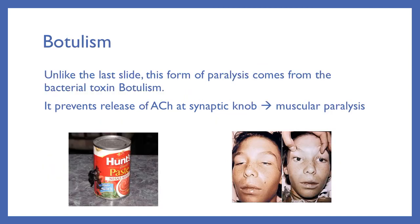Another type of paralysis is from botulism. Unlike the last slide, this form of paralysis comes from the bacterial toxin botulism. It prevents the release of acetylcholine at the synaptic knob, and because acetylcholine is not released, there is no communication with that muscle cell, and your muscles do not respond. We can get this commonly from food — for example, if canned food begins to spoil in just the right way where the botulism bacteria is able to grow, it will produce this chemical. This boy is wide awake, but he has zero control of his facial muscles; the eyelids droop and he can't talk — all of that is paralyzed due to the toxin.